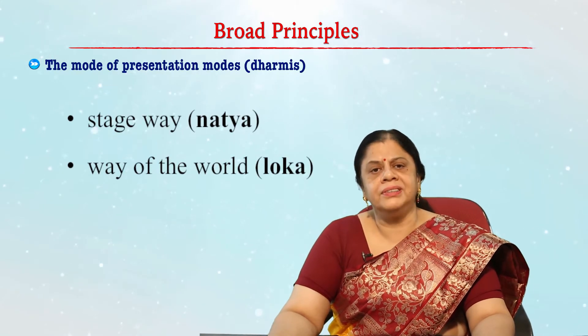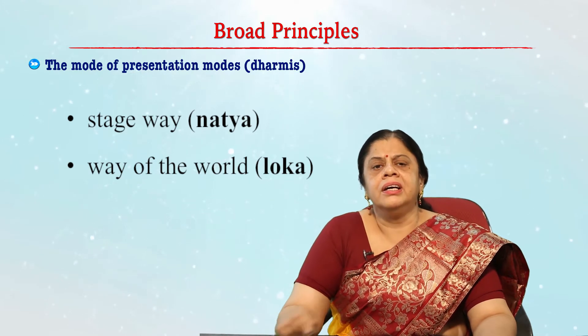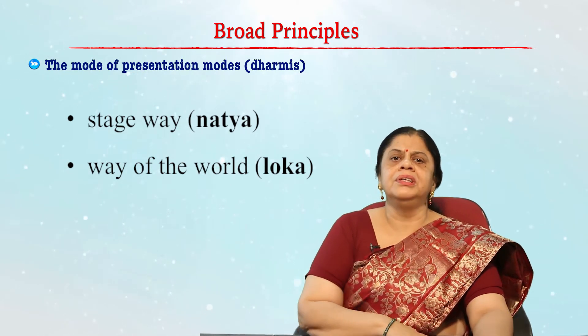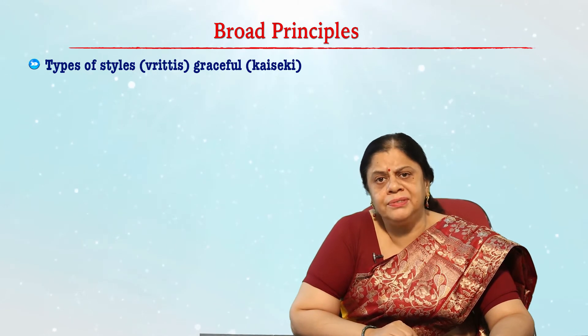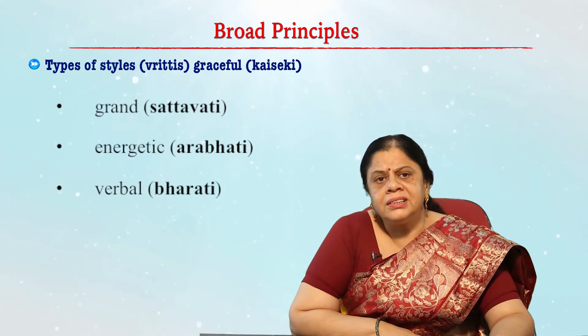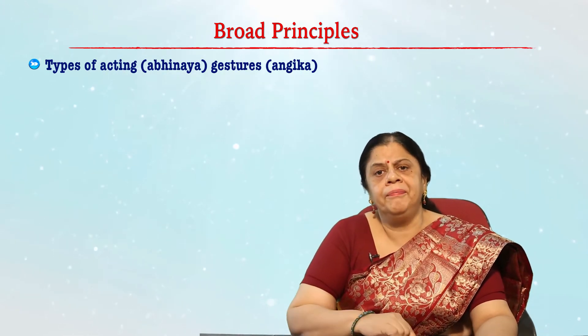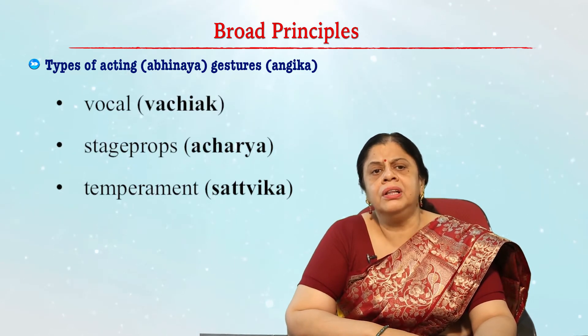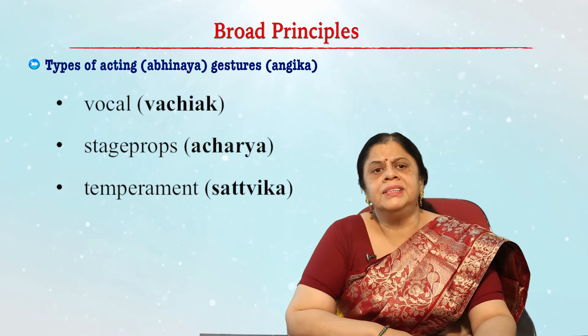Let us understand the broad principles that govern the structure of Indian dance. The first principle is the mode of presentation in the form of Dharmas — the stage way Natya and the way of the world known as Loka. There are different types of styles known as Vrittis: Graceful is Kaisiki, Grand is Sattviki, Energetic is Arabhati, and Verbal is Bharati. There are also different types of acting known as Abhinaya, such as gestures — Angika, Vocal — Vachika, Stage prop — Aharya, and various positive temperaments — Sattvika.